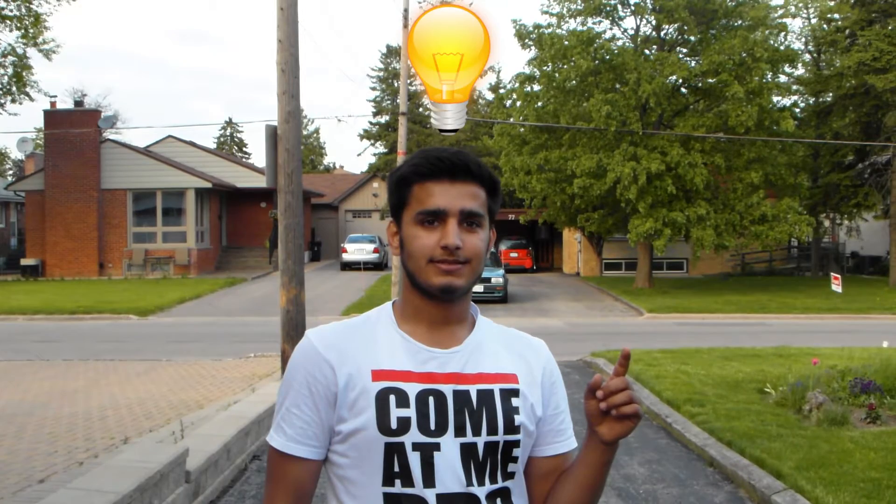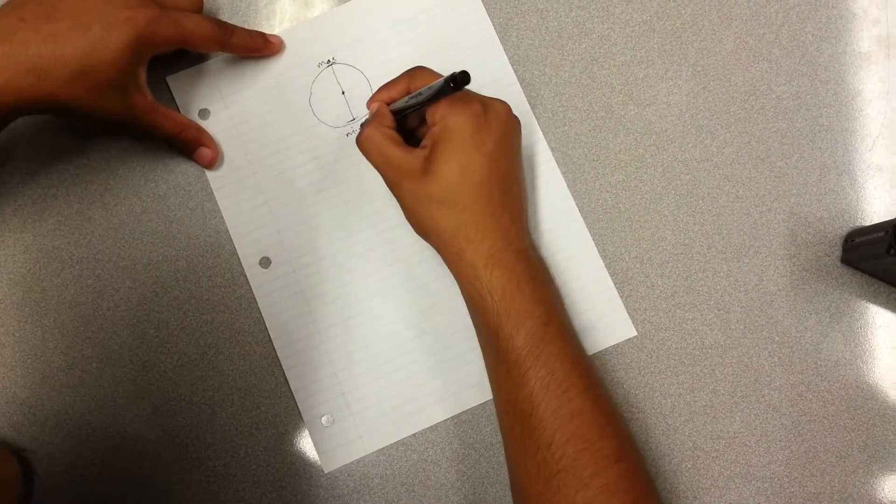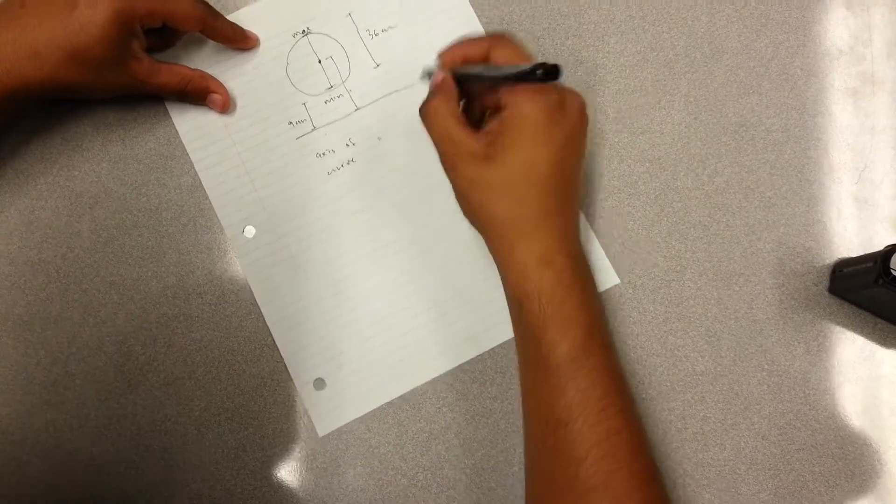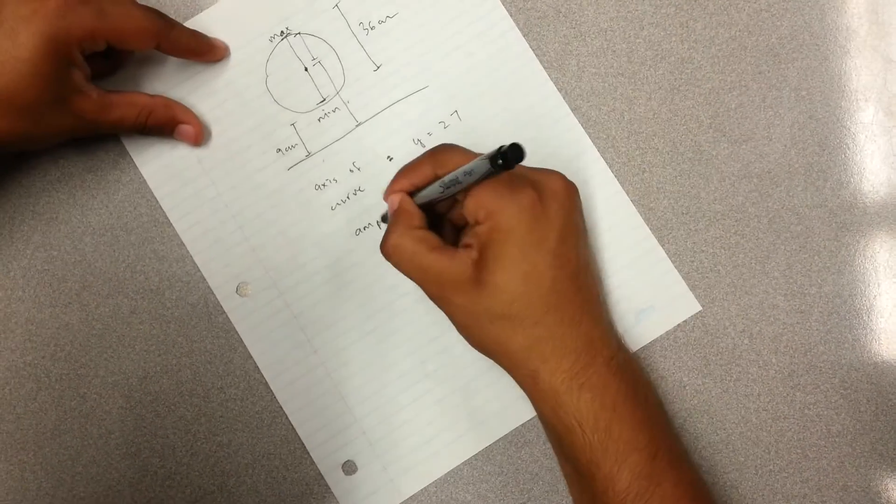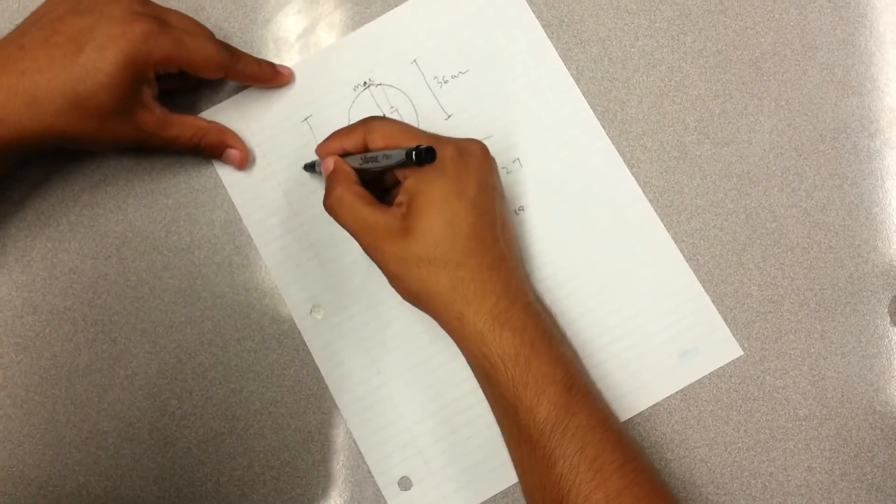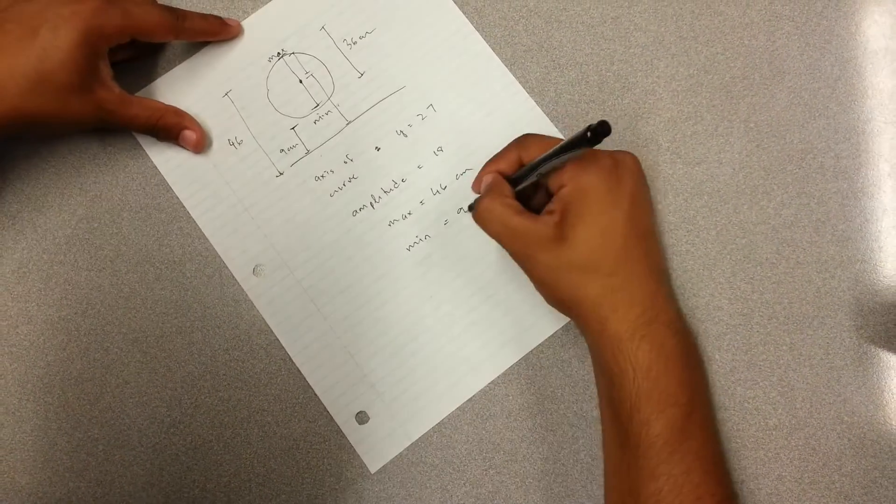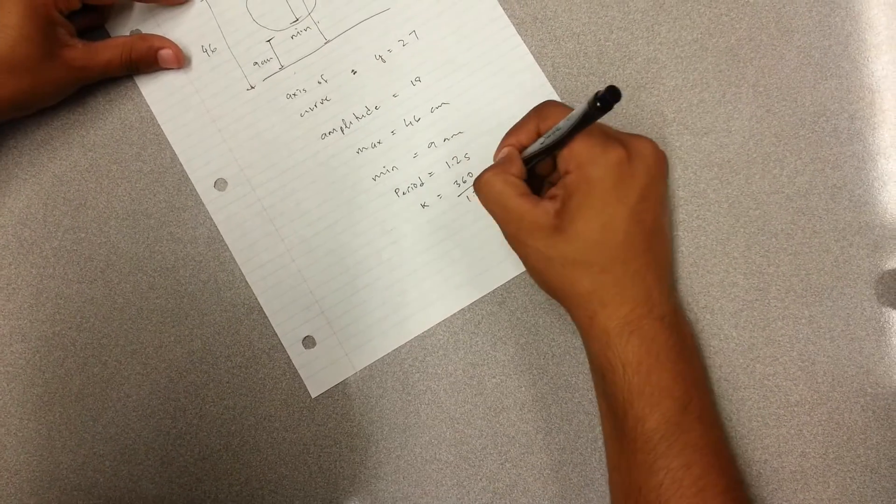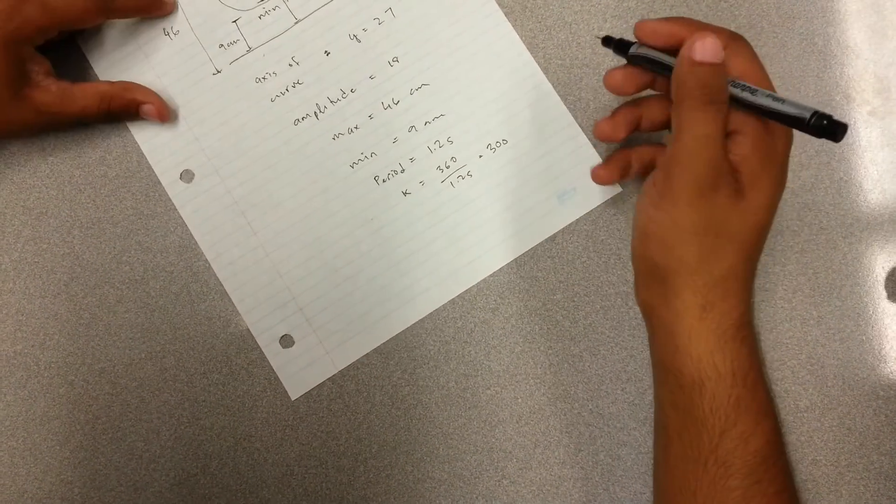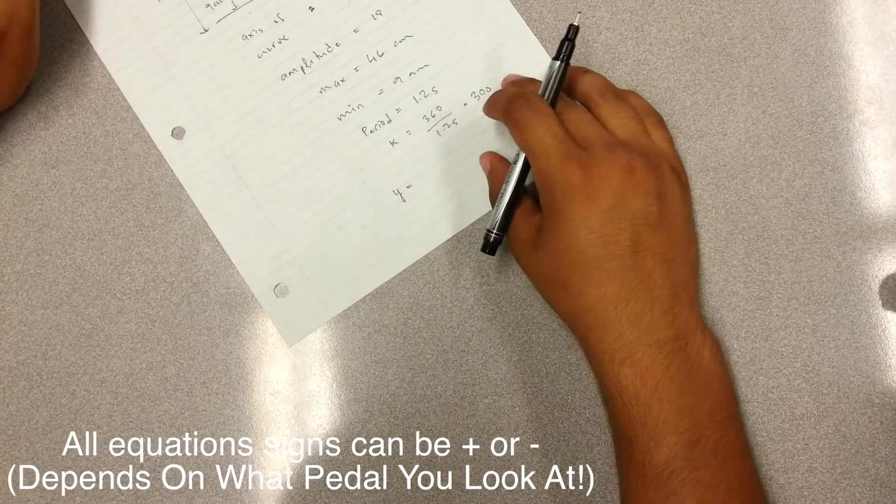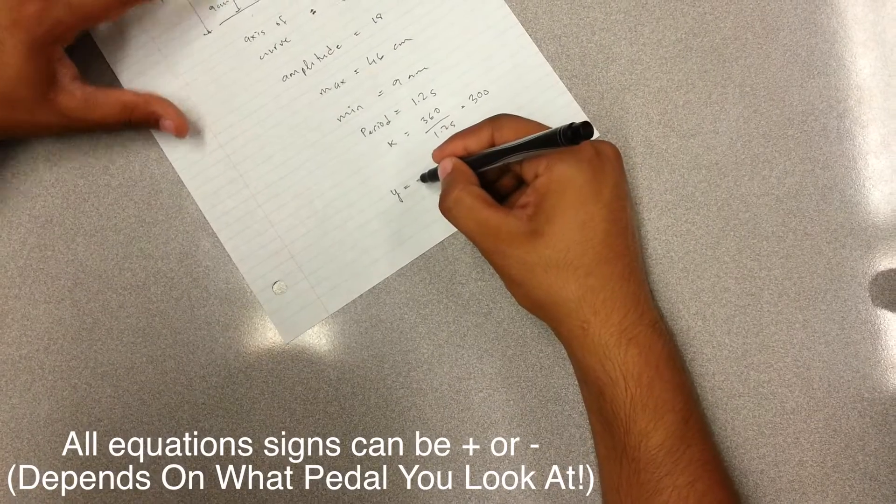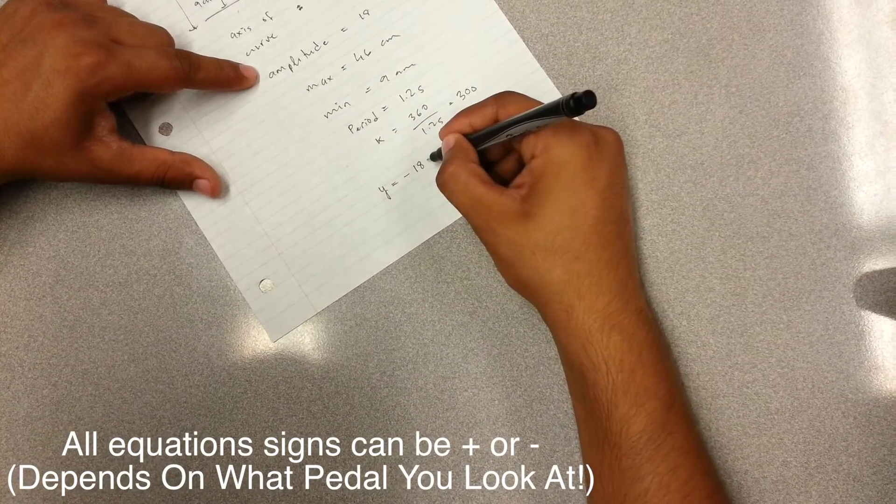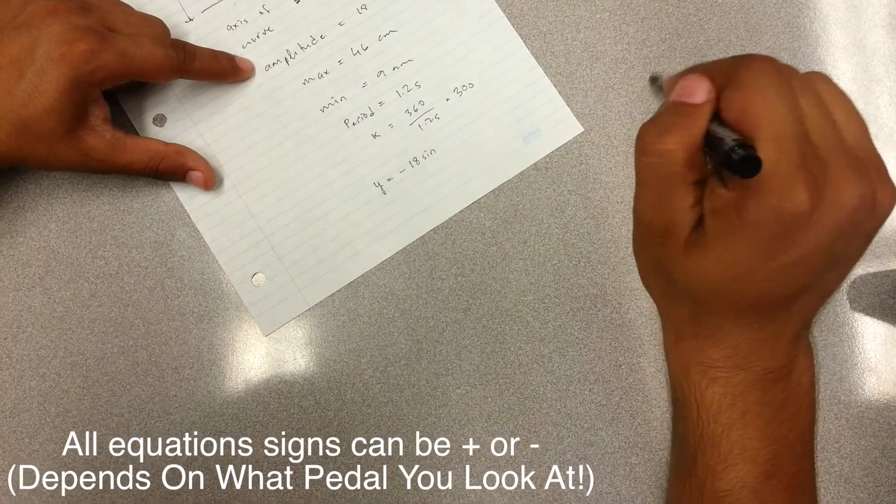Wait... I'll be back! If I want to make an equation out of this, the equation would be y equals negative. Since a is 18, it would be 18. It would be a sine graph because the graph goes up and down. The height changes.